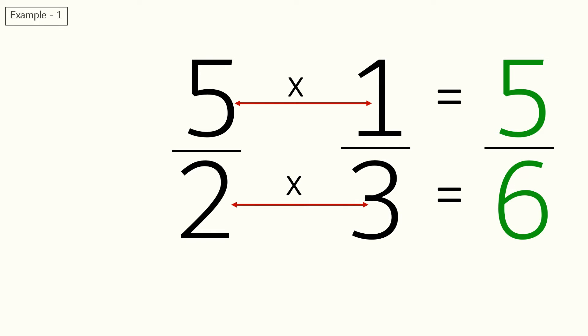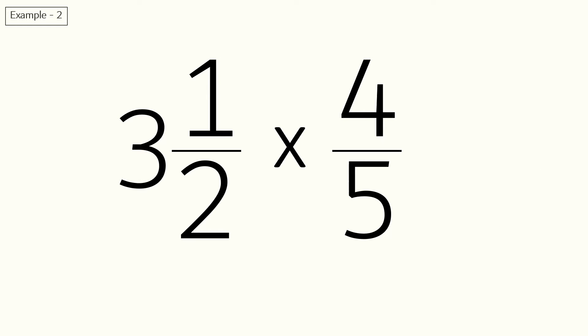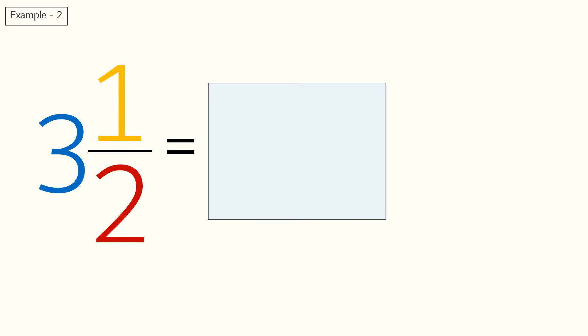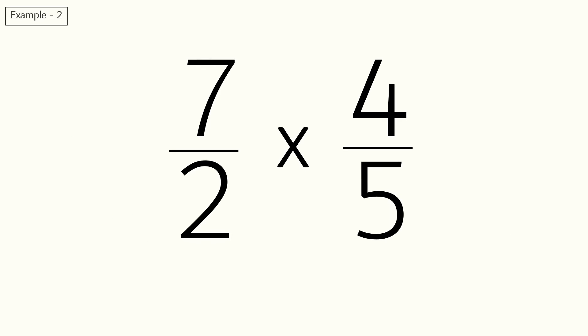Here we have one mixed fraction and one proper fraction, so we will first change the mixed fraction to simple fraction. For that, we will first multiply 3 and 2 which is 6, and then add numerator 1 to 6. So now we get fraction 7 by 2. So our new equation is to multiply 7 by 2 and 4 by 5.